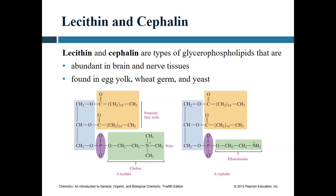Cephalin has the same idea — two fatty acid chains. The only difference is that instead of choline on the phosphate group, we've got ethanolamine. The carbon chains here are 16-carbon chains, palmitic acid derivatives. Choline makes it lecithin; ethanolamine makes it cephalin.